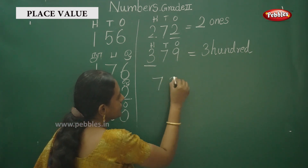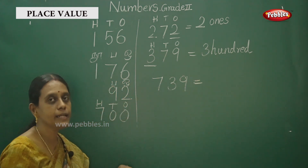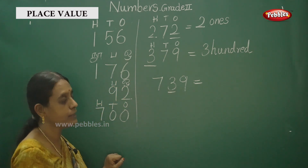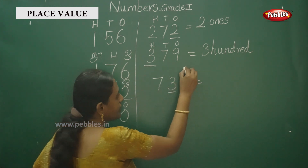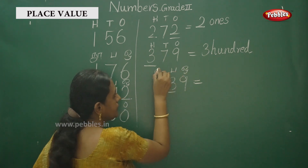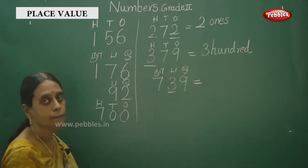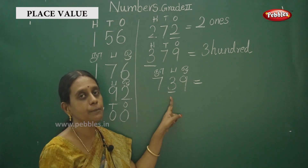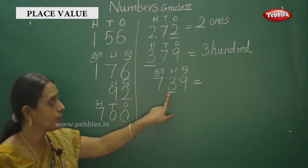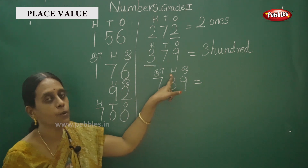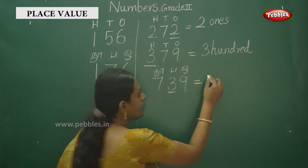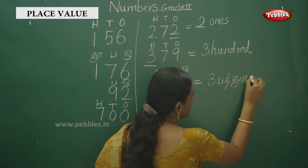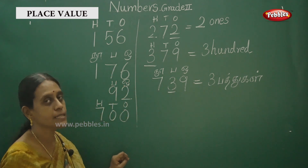The number is seven hundred and thirty-nine. Find the underlined digit. This is the way to write place value. The answer is 10. The answer is 3 tens. So this is the way to write place value.